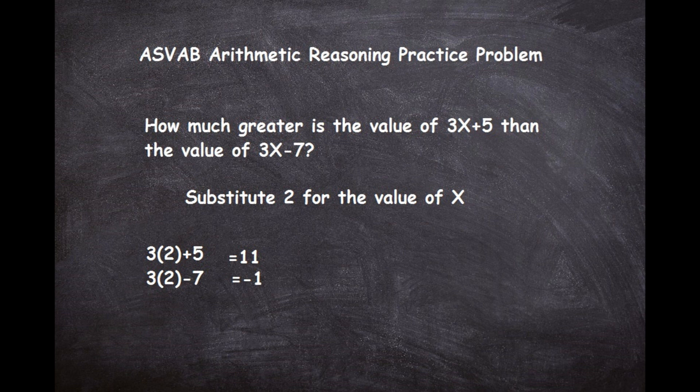So now all we have to do is look back at what they were asking us: how much greater is the value of 3X plus 5 than the value of 3X minus 7? Well, we know 11 is obviously greater than negative 1, and it's greater by a value of 12, because 11 would get you to 0 and then you just add one more for the negative 1, so it's 12 greater. So the answer to this problem is 12.